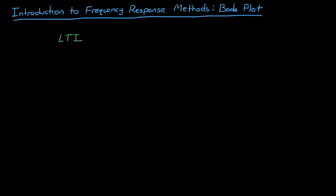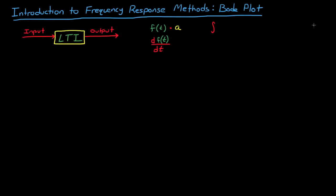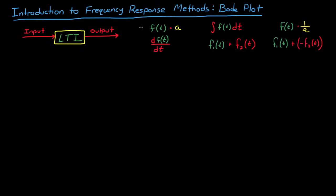I want to start by explaining another benefit of an LTI system. If you design a linear time-invariant system, there's only a limited number of mathematical operations that you can use. When building an LTI system you can only use: multiplication by a constant, differentiation of the input signal, integration of the input signal, and adding two inputs together. You can always do division by multiplying by the reciprocal, and you can also subtract by adding a negative number. You might be wondering why it's important for me to start this lecture this way, and why bring up the fact that a linear system can only consist of these six operations.